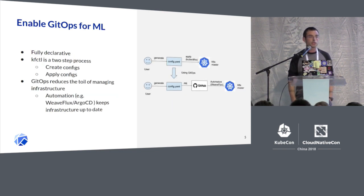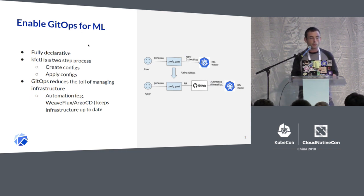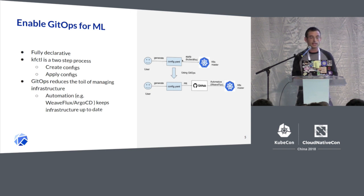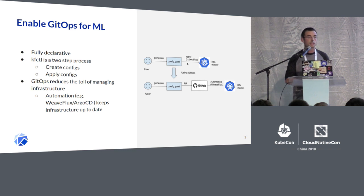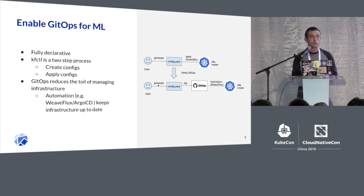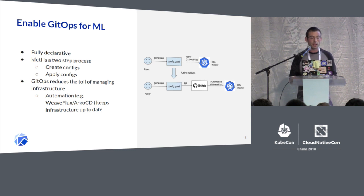We're solving this with a two-step process using a command line tool called kf-cuddle. In the first step — the generate phase — we generate a whole bunch of configurations. In the second phase, we apply those configs to your Kubernetes cluster to actually set up that infrastructure. The reason for this two-step process is that it enables us to switch to a GitOps-type workflow. With GitOps, after you generate the configs, instead of applying them directly, you push them to a Git repo. Then you can use a tool like Argo CD or Flux, which can take those configs and automatically synchronize them to your Kubernetes cluster.